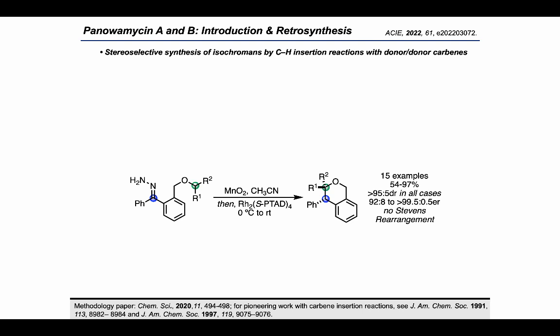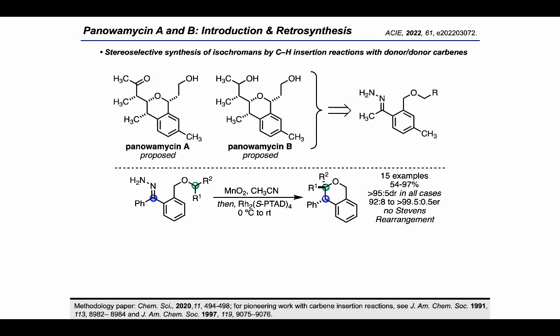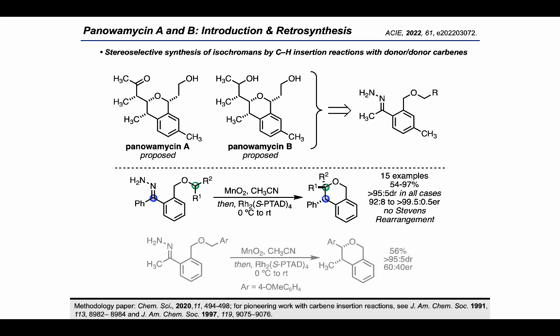Additionally, we do not observe any instances of the competing Stevens rearrangement. As such, we imagined a retrosynthetic approach for the panolamycins where an acetophenone-derived hydrazone undergoes 1,6-CH-insertion to furnish the requisite isochroman while setting the two cis stereocenters on the heterocycle. One challenge with this approach is that, in our previous work, the only example of a methyl-aryl carbene gave poor enantioselectivity, observing a 60:40 ER.